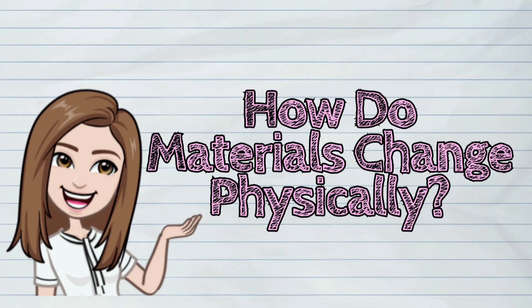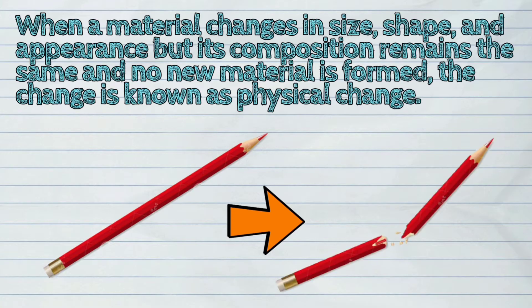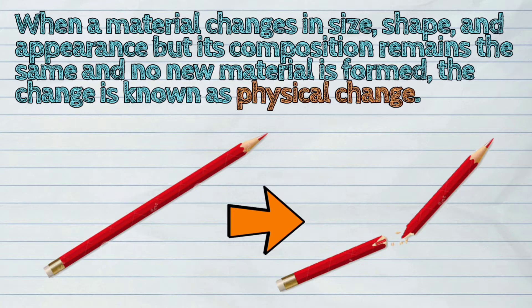When a material changes in size, shape, and appearance, but its composition remains the same and no new material is formed, the change is known as physical change.